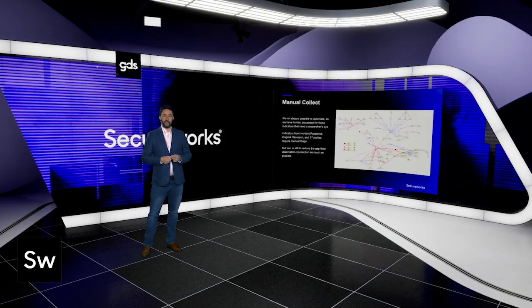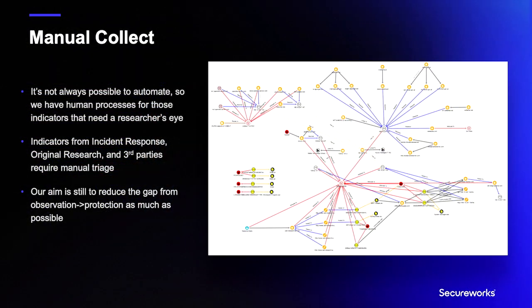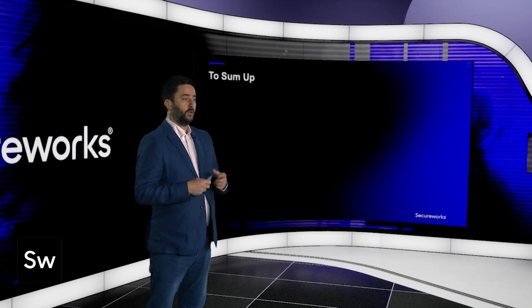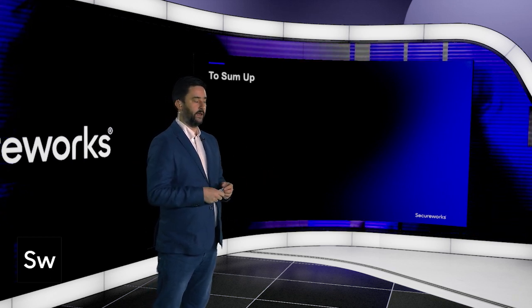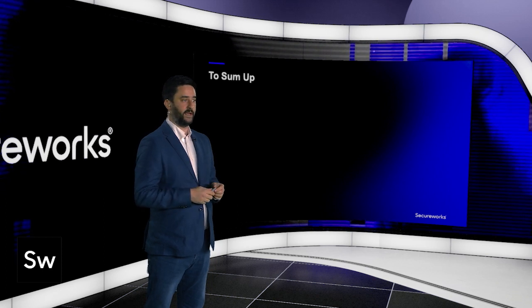As well as automated collections, we also do a lot of manual collection for indicators we cannot automatically collect but that are still important. We have human processes and people dedicated to harvesting indicators, putting them into TIMSS2, connecting them up to the context we have, and making sure they're published to Taegis where appropriate. Rebecca Taylor has a fantastic on-demand session diving into how we ingest indicators into TIMSS2 and triage those for detections. Graham Austin also does a deep dive into the QakBot botnet emulation, which is a fascinating insight into the FBI takedown.